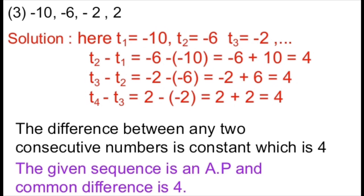The next sequence is -10, -6, -2 and 2. Here T1 is -10, T2 is -6, T3 is -2 and so on. The difference T2 minus T1 is -6 plus 10, which is 4. The difference T3 minus T2 is -2 minus (-6), that is -2 plus 6, which is 4. The difference between any two consecutive terms is constant, which is 4.